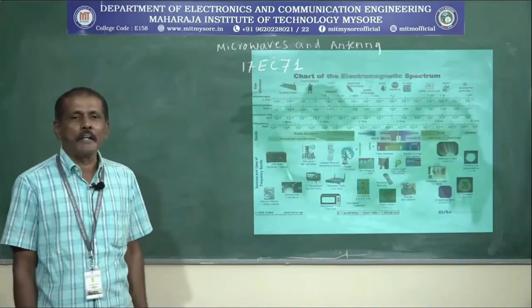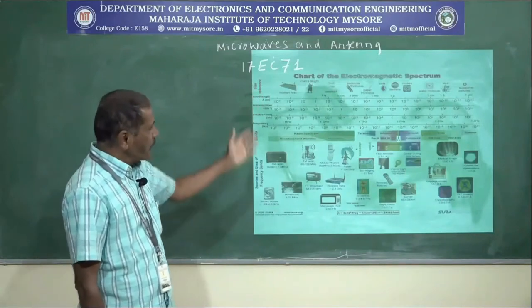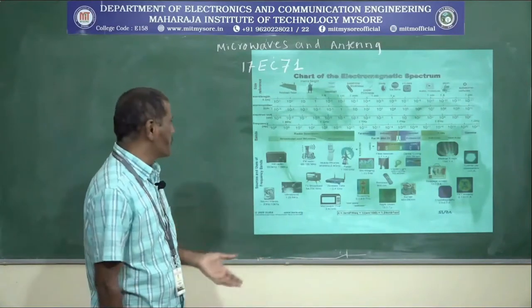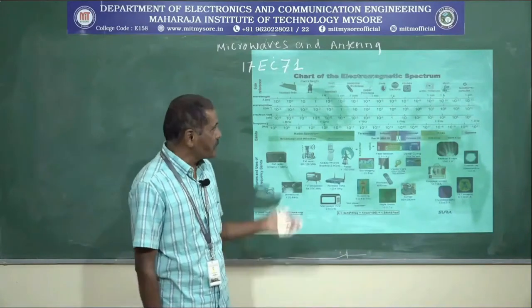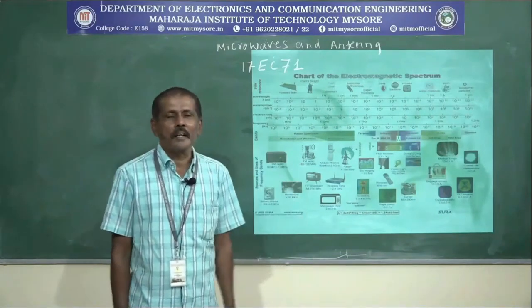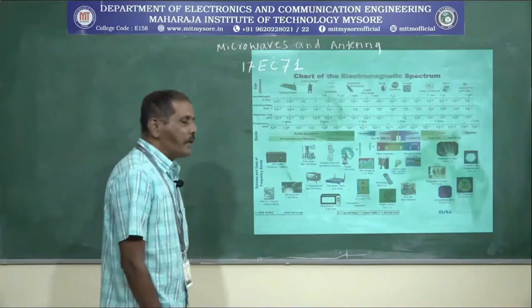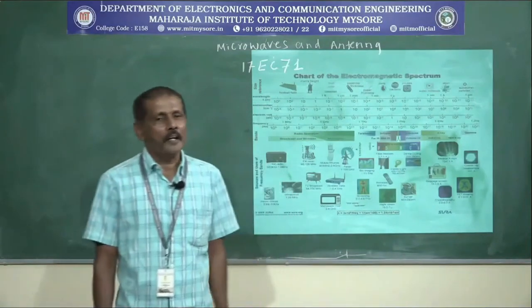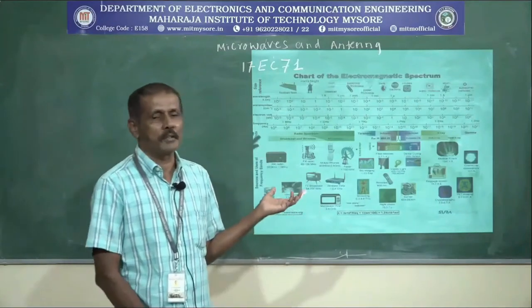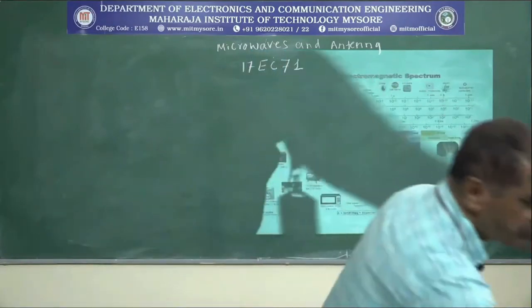The electromagnetic spectrum consists of various frequency bands from low frequency to very high frequency ranges. Different frequency ranges are used for different purposes. The microwaves are the range of frequencies varying from 1 GHz to 100 GHz, and the wavelength of this frequency range is 3 centimeters to 0.3 centimeters. We measure frequency in gigahertz and wavelength in centimeters.